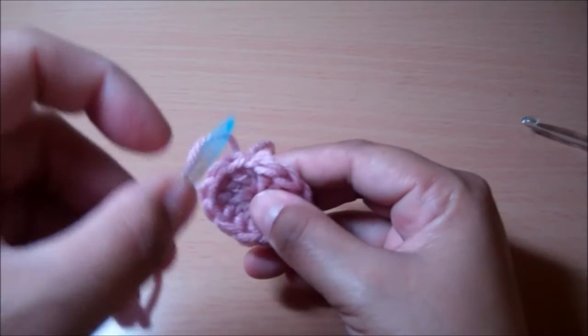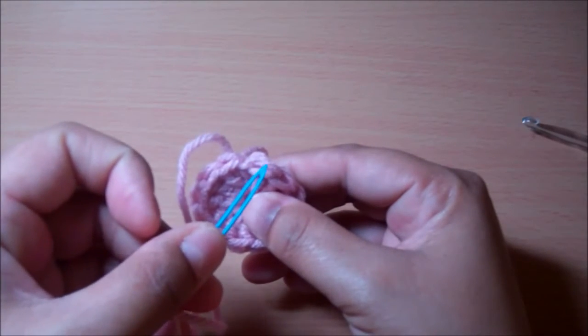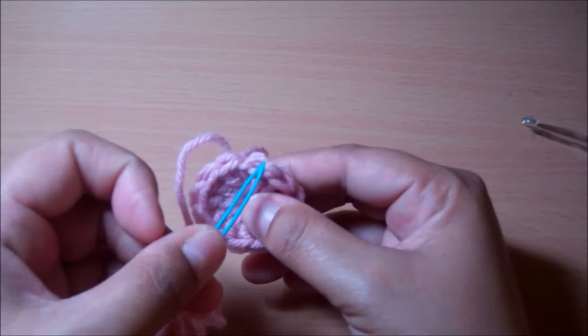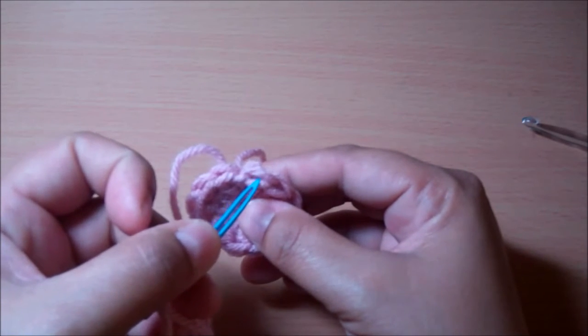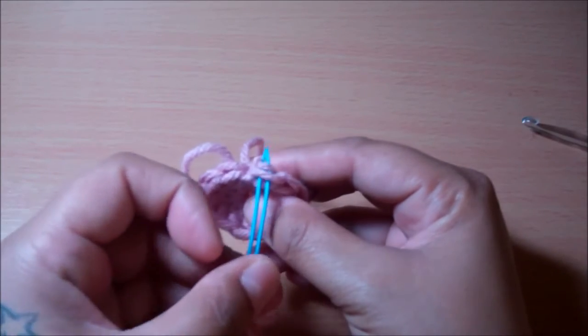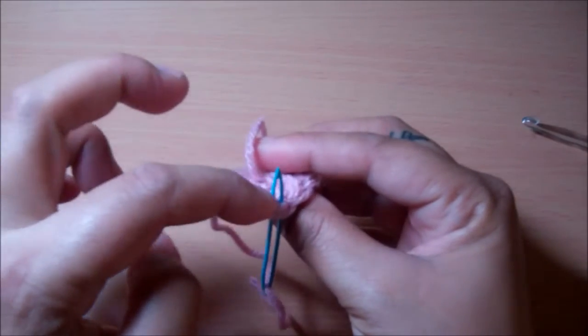And then you're going to bring it back and you're going to insert it into this first double crochet that was made, but right in the middle, so in between those two loops and out the back and make sure you grab on that back bump.